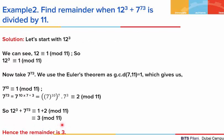Moving on to the next example, here we are given a sum of two terms: 12 to the power 3 plus 7 to the power 73, and we have to find the remainder when this is divided by 11. Let's start with the first term, 12 to the power 3. We know that 12 is congruent to 1 mod 11, since 12 minus 1 equals 11, which is divisible by 11. Raising both sides to the power 3, we get 12 to the power 3 is congruent to 1 mod 11.